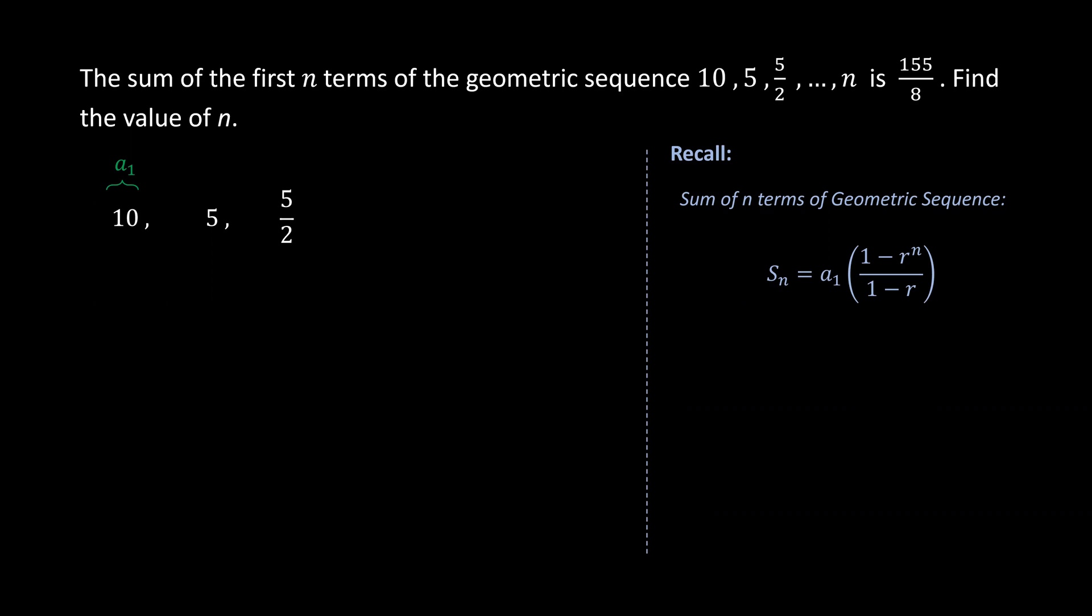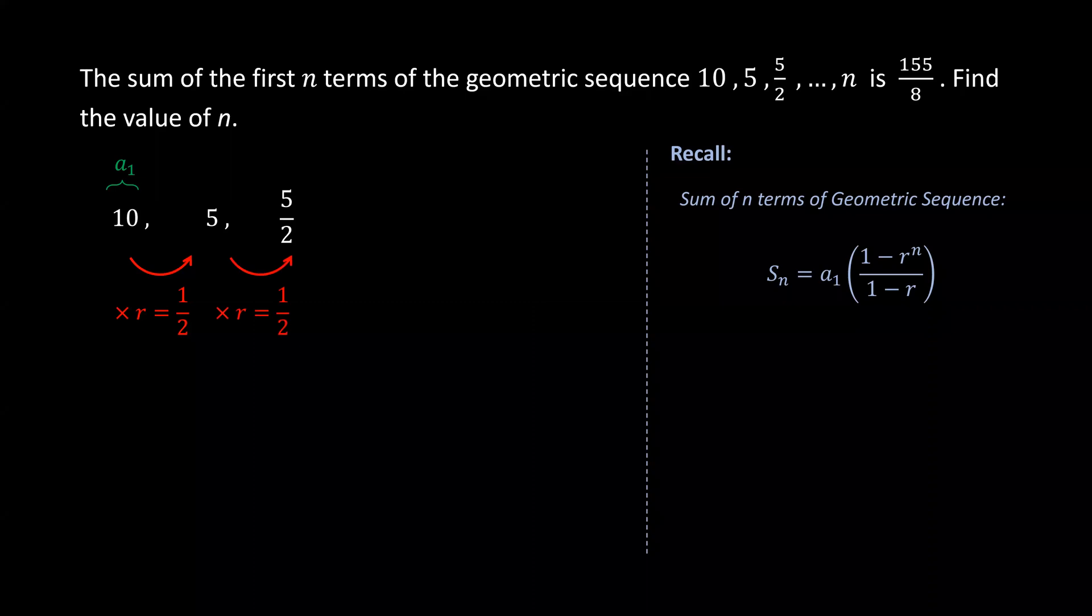We can also divide the third term by the second term to get the same common ratio. To check, 10 multiplied by 1/2 becomes 5, and 5 multiplied by 1/2 becomes 5/2. So the common ratio is 1 over 2.